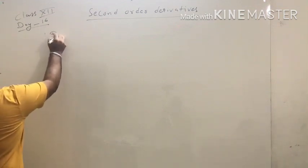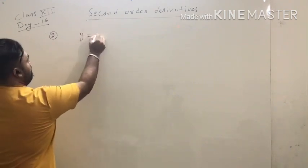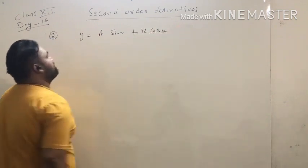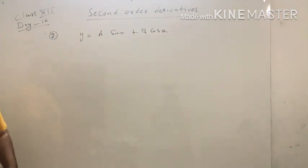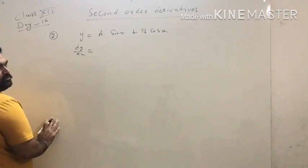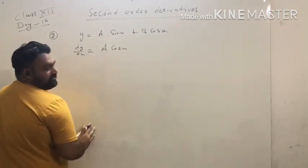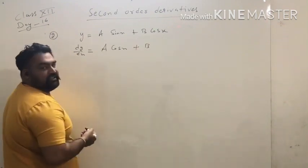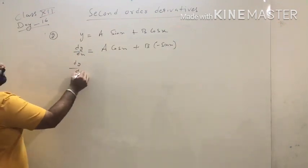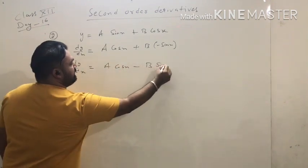Question number two: y equals a sin x plus b cos x. We have to find the double derivative. Now dy/dx equals a — a is constant — the derivative of sin x is cos x; plus b — b is constant — the derivative of cos x is minus sin x. So the value of dy/dx equals a cos x minus b sin x.